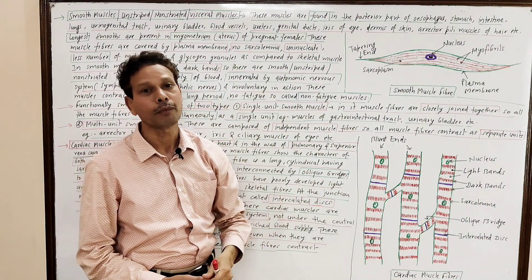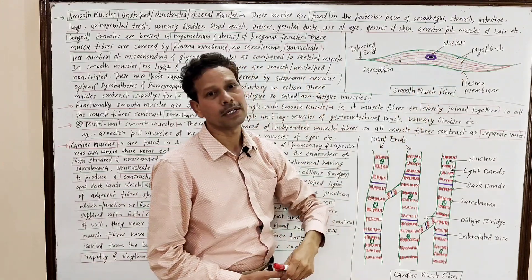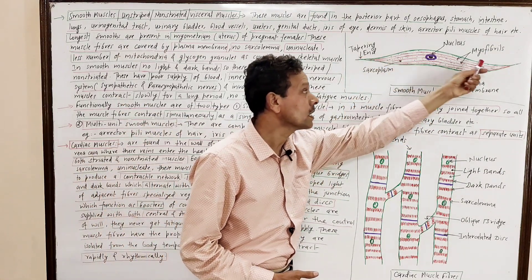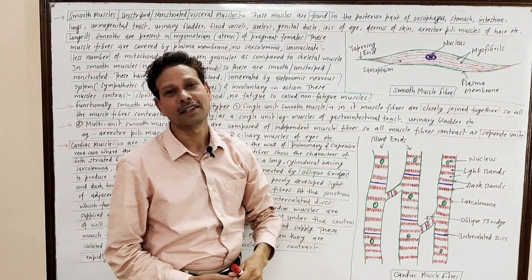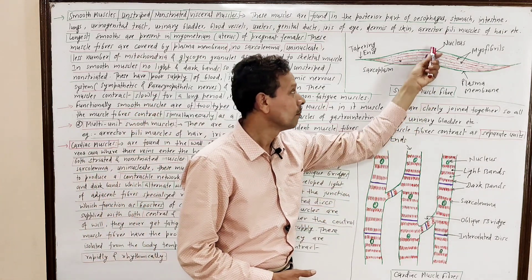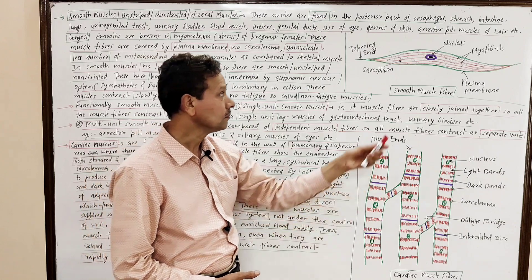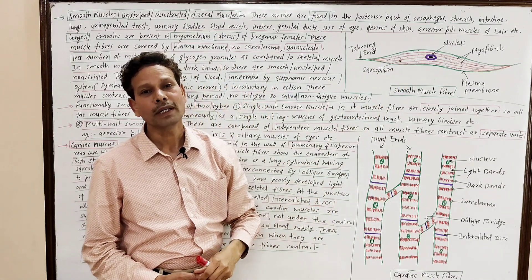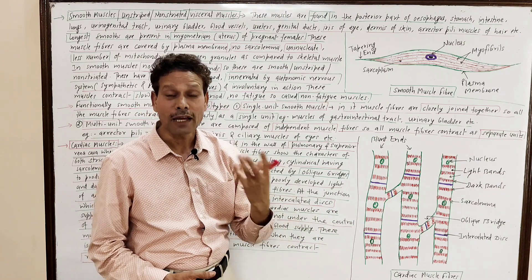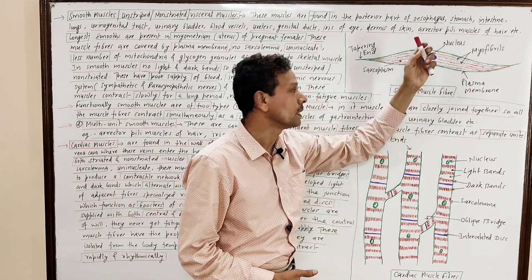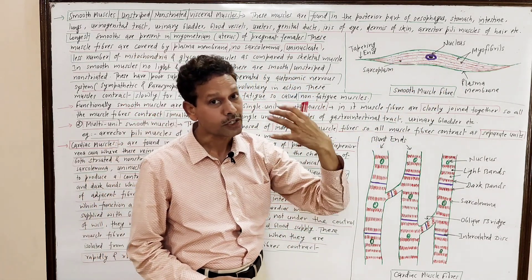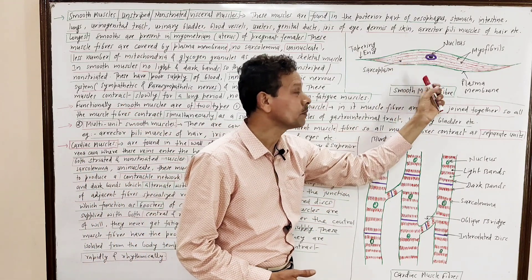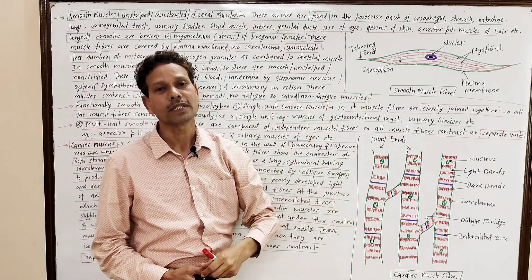Competitive exam students, please note down each and every point. In these smooth muscle fibers, there is only a simple plasma membrane — no sarcolemma. Their ends are tapering, and these are uninucleated, with a single nucleus present almost in the middle part of each muscle fiber. These smooth muscles have a few mitochondria, as well as few energy granules and glycogen granules, because these muscle fibers contract slowly. But their contraction is long, without any fatigue. So these are named non-fatigued muscles — they contract continuously but slowly.